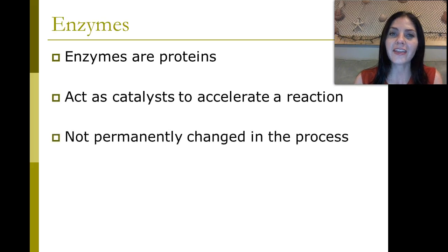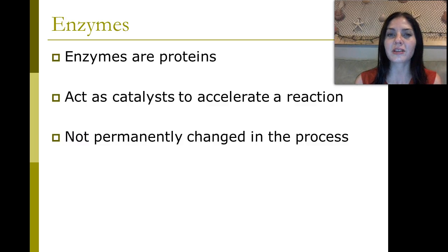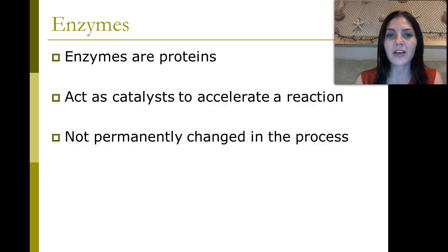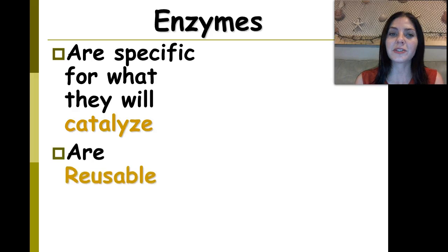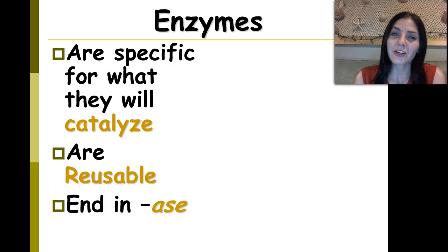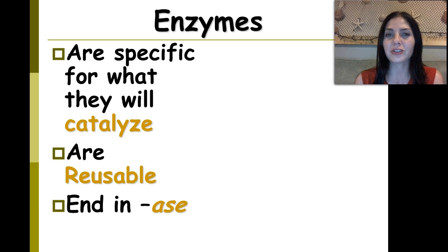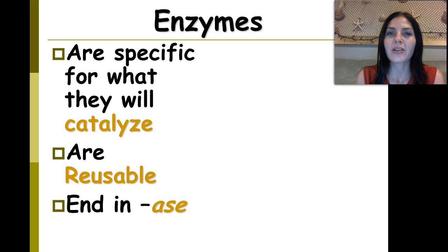Enzymes are proteins, and they act as catalysts to accelerate a reaction. A catalyst is something that speeds a reaction up. They are not permanently changed in this process, meaning after an enzyme catalyzes one reaction, it can go on to catalyze another. Enzymes are specific for what they will catalyze, and they are reusable. For example, the enzyme lactase can only catalyze the reaction of the breakdown of the sugar lactose. It can't break down hydrogen peroxide or any other type of sugar — it can only break down lactose sugar. So, enzymes are specific.